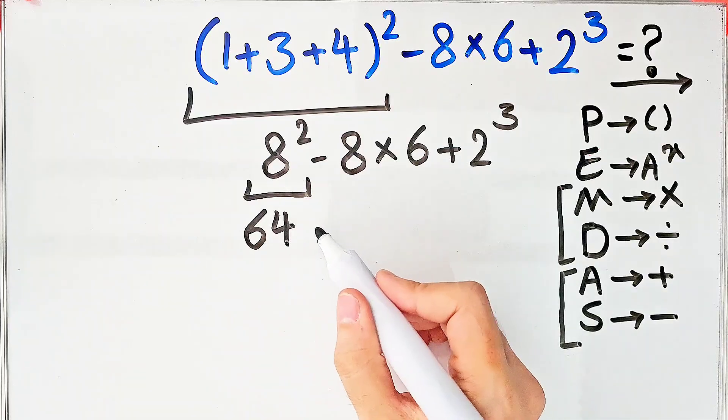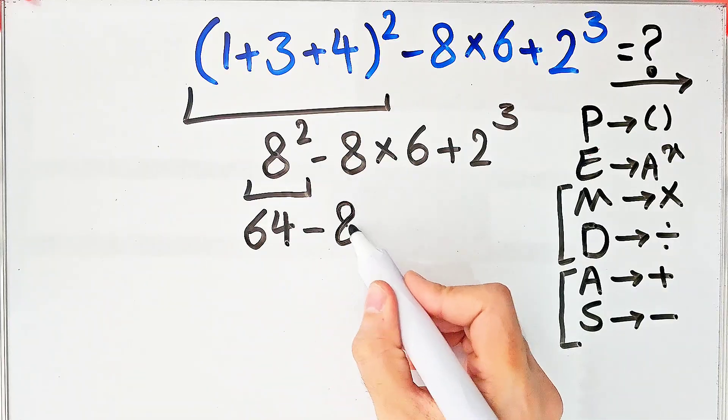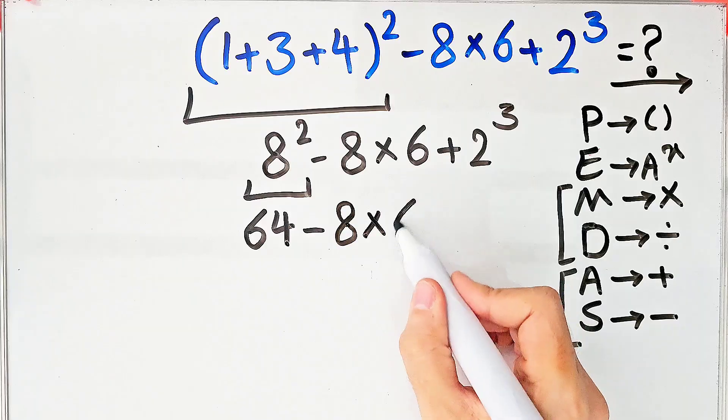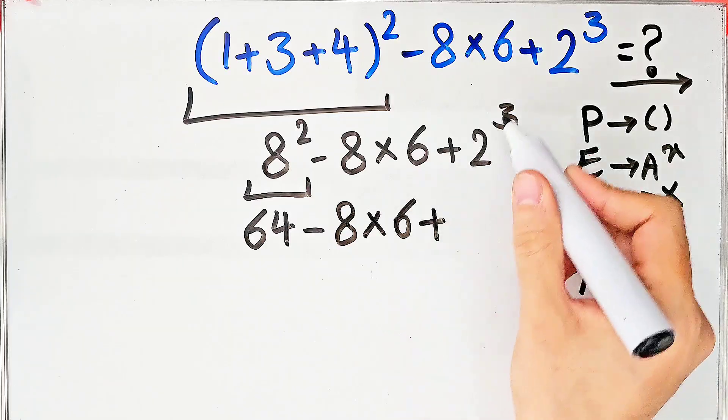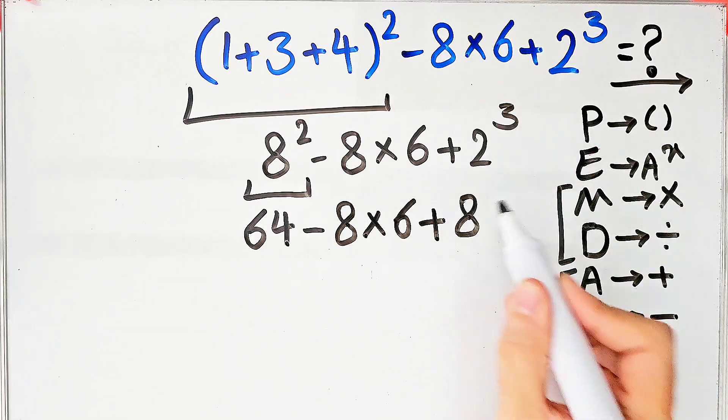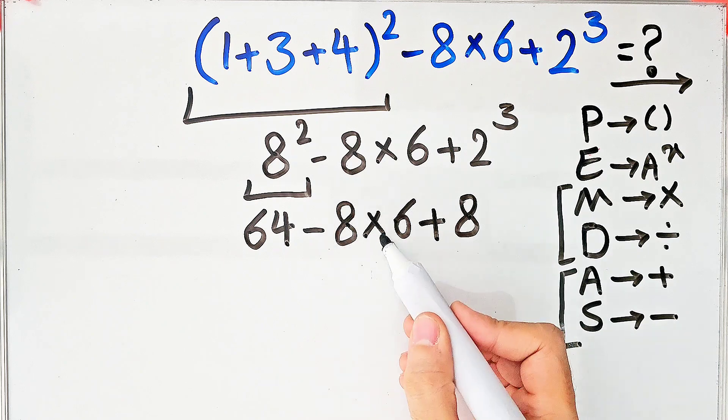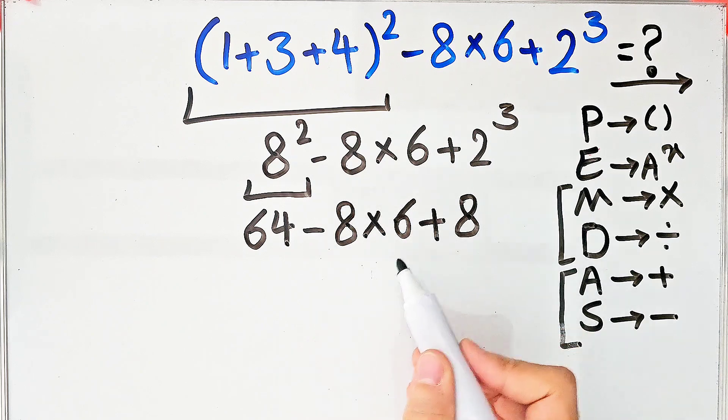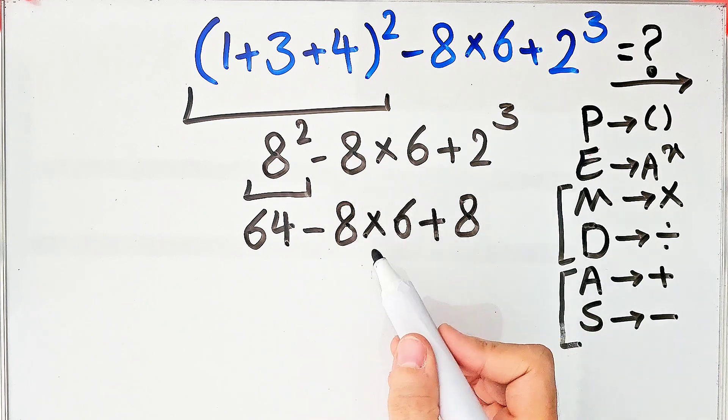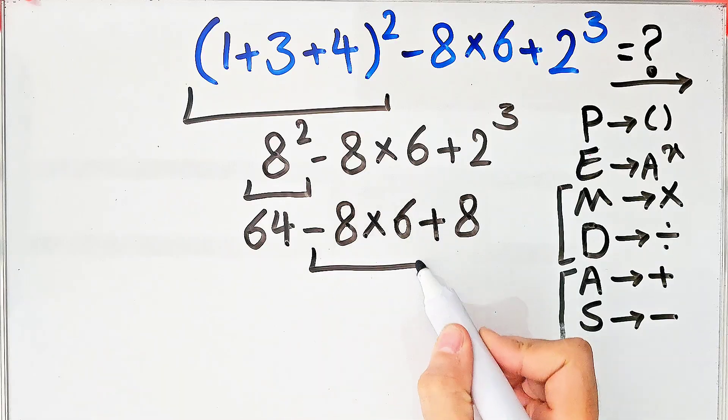Now we have sixty-four minus eight then times six then plus two to the power of three which equals eight. In this step we have subtraction multiplication and addition. First we do this multiplication: negative eight times six equals negative forty-eight.